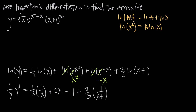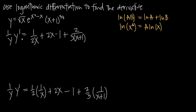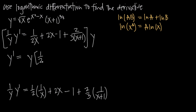Our goal is to solve for y prime. First we simplify the right-hand side: 1 half times 1 over x becomes 1 over 2x, then plus 2x minus 1, and 2 thirds times 1 over x plus 1 becomes 2 over 3 times quantity x plus 1. Now we solve for y prime by multiplying both sides by y, which cancels the 1 over y on the left, leaving y prime on the left equal to y times the simplified right-hand side.